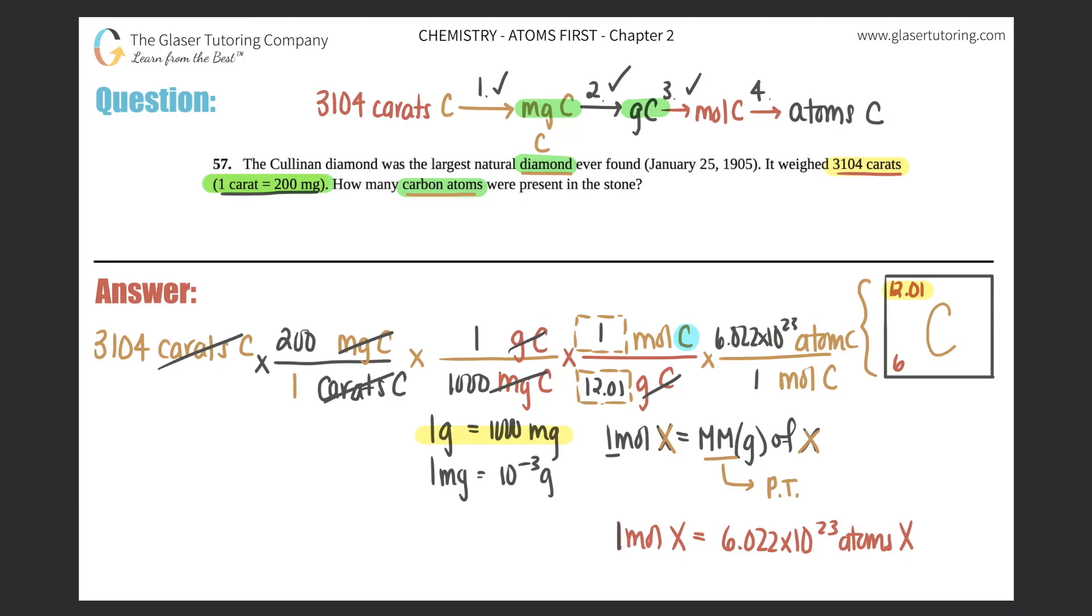Now multiply this all in one shot. I'll do the numerator then the denominator and divide. Multiply the numerator: 3104 times 200 times 6.022 times 10 to the 23rd equals 3.73846 times 10 to the 29th. The denominator is just a thousand times 12.01, which gives 12,010.